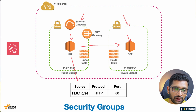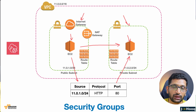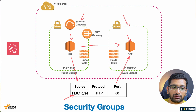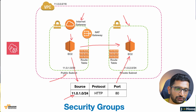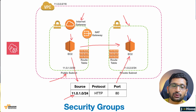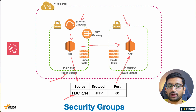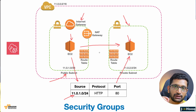The request will come from the public instance and go to the private instance based on the security group rules. You need to specify the source — here the IP range is 11.0.1.0, which is the IP range of the public subnet. The protocol is HTTP and the port is 80. This is how you define the inbound rule within AWS resources. The main difference is that you can create a security group rule between AWS resources.